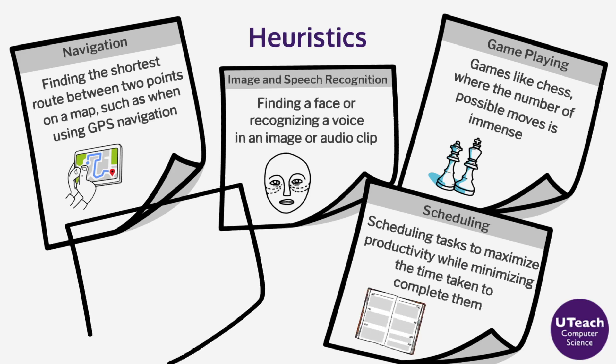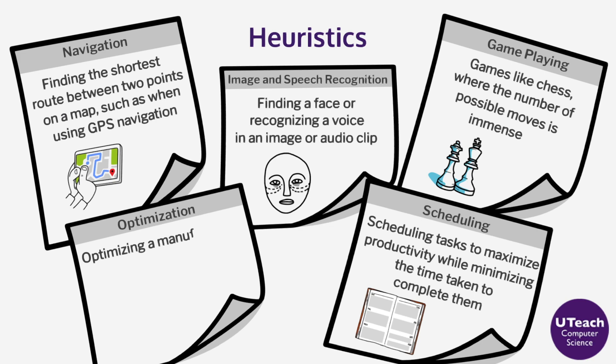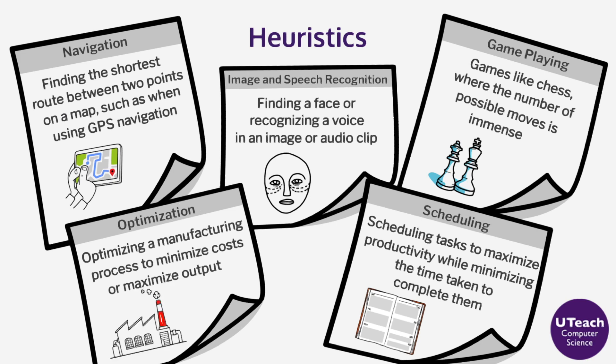Five: Optimization — optimizing a manufacturing process to minimize costs or maximize output. Also, scheduling tasks to maximize productivity while minimizing the time taken to complete them. Heuristic approaches are versatile and can be applied to a wide range of problems, making them a valuable tool for problem solving in many different fields.